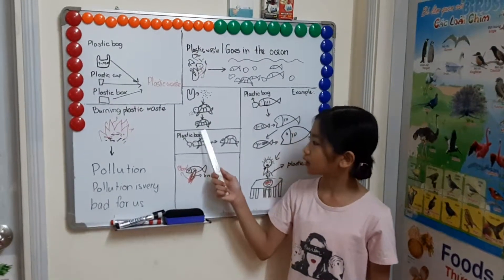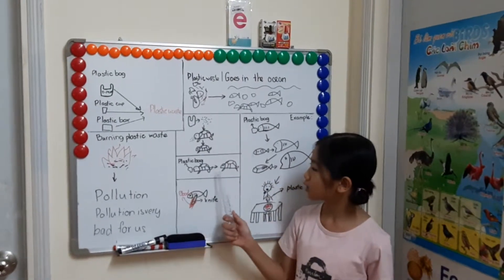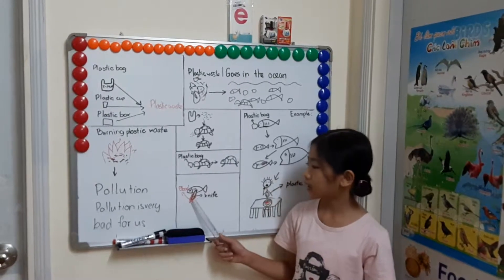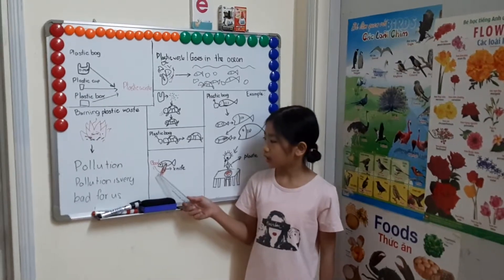When they eat plastic, they get sick. Some animals eat plastic bags, so they get sick too. Some plastic waste can hurt the animals. They suffer a lot, and they die.